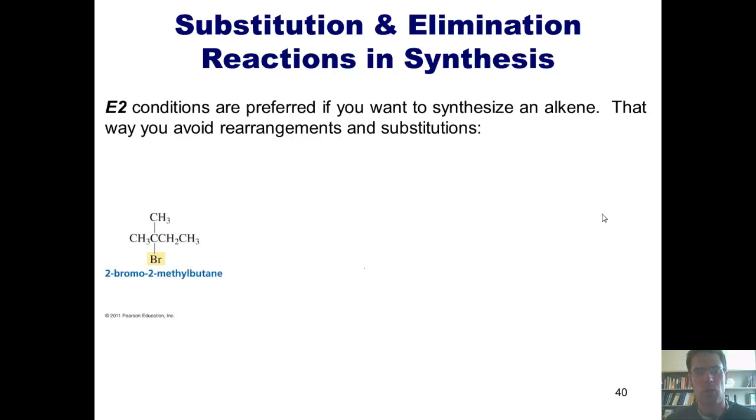Now, if you're in a circumstance where you want to synthesize an alkene through an elimination process, there are two different ways we've learned of doing it. One is by an E1 mechanism, and another is by an E2 mechanism. Now, one nuance that's important for you guys to know is this. Generally speaking, E2 conditions are preferred, and the reason is because E1 conditions can frequently lead to rearrangements or competitive substitution reactions. If for example, I have this starting material, 2-bromo-2-methylbutane, and I react it under SN1E1 conditions,